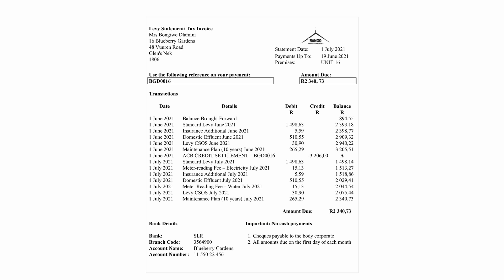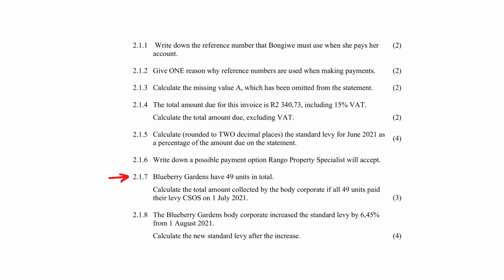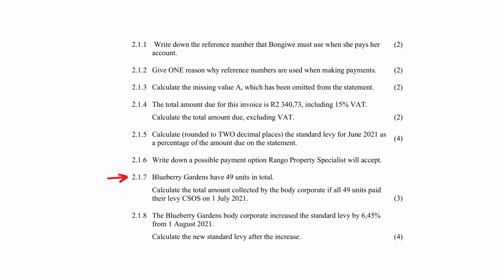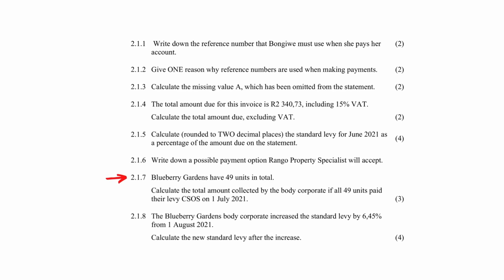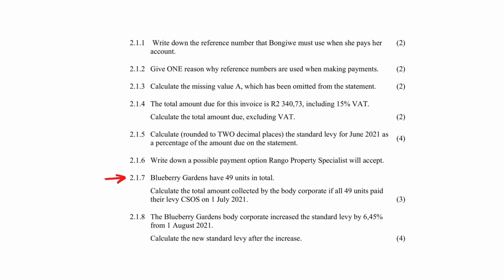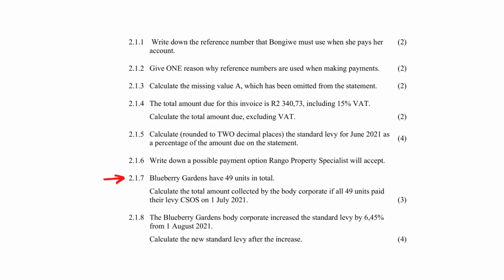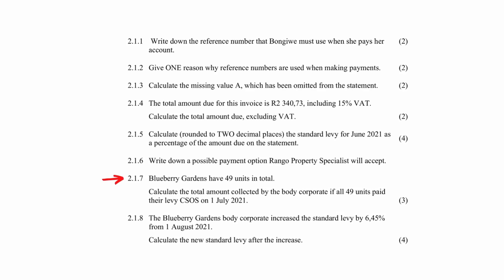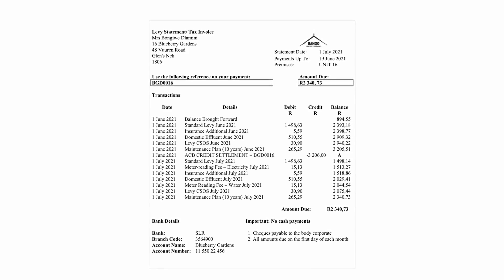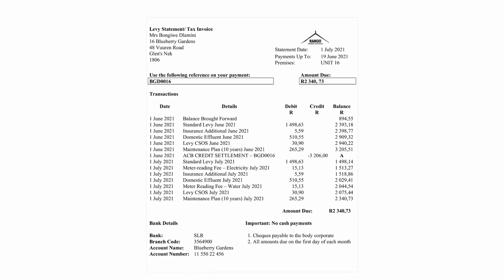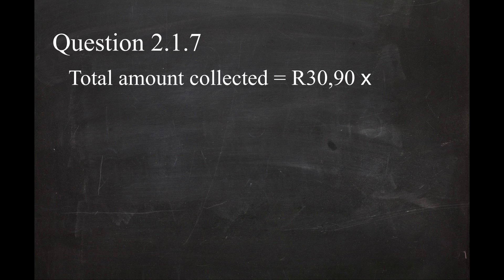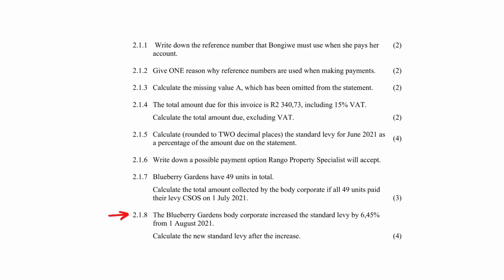In Question 2.1.7, you are instructed to calculate the total amount collected by the body corporate if all 49 units in the complex paid the levy CSOS for July 2021. The total amount collected equals the CSOS levy amount of R30.90 multiplied by the total number of units of 49, which gives a total amount of R1514.10.